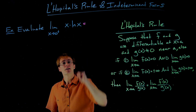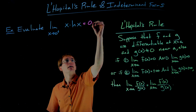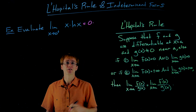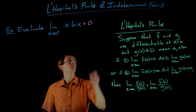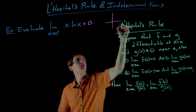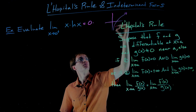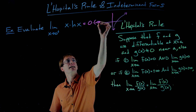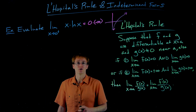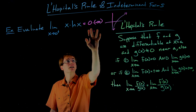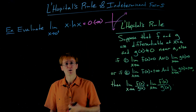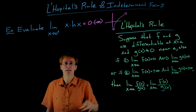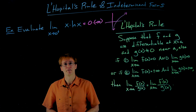If we try direct substitution piece by piece: x goes to 0, and the natural log function has a vertical asymptote at x equals 0, so it approaches negative infinity as we approach 0 from the right. So we have an indeterminate product — 0 times negative infinity — which is an indeterminate form.